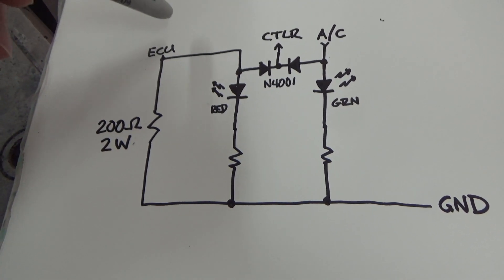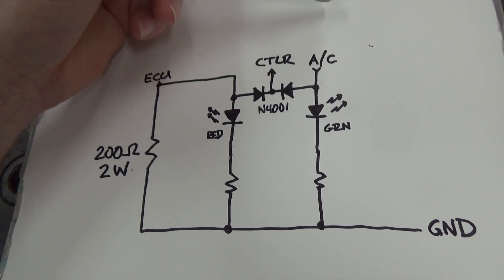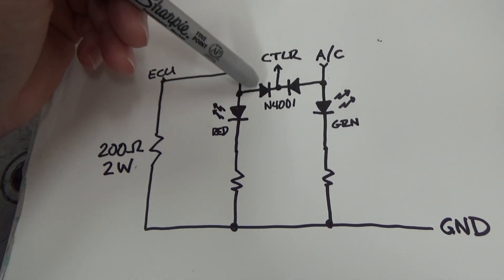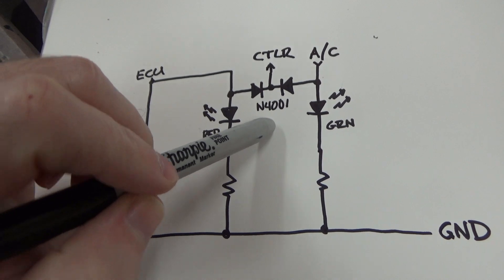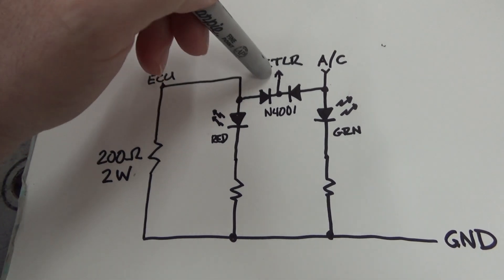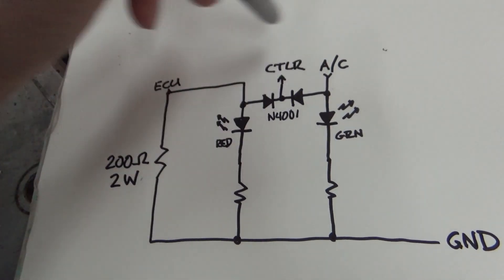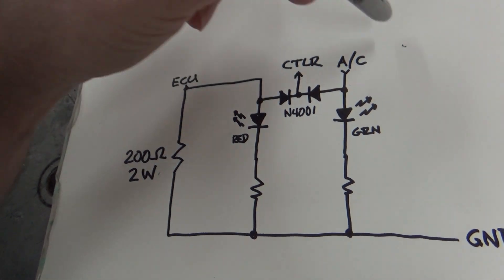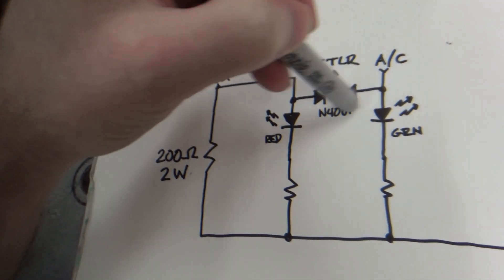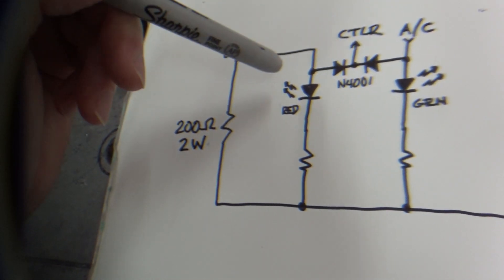Here we have the two signals coming in from the ECU and the AC coming through this path through these two diodes, these N4001 diodes. What that'll do is if either one of these has 12 volts on it, this line will have 12 volts on it, but does not allow 12 volts to go between these two. The diodes prevent that.